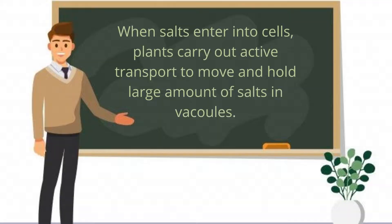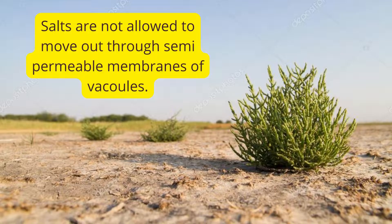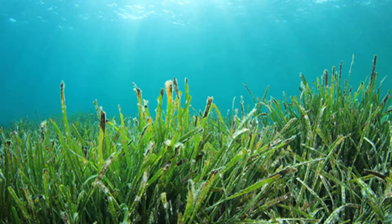Now let's look at what adaptations or mechanisms are found in halophytes. When salts enter into the cells, plants carry out active transport to move and hold large amounts of salts in vacuoles. Salts are not allowed to move out through the semi-permeable membrane of vacuoles. As a result, the vacuolar sap becomes even more hypertonic than sea water, and so water does not exit the cells.